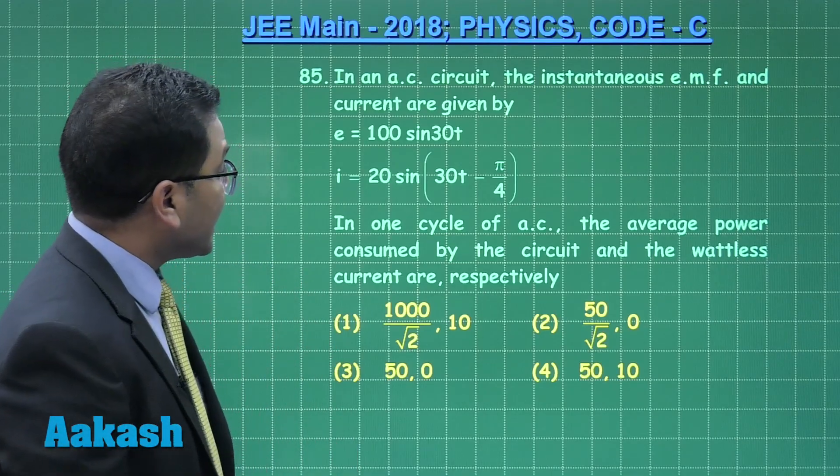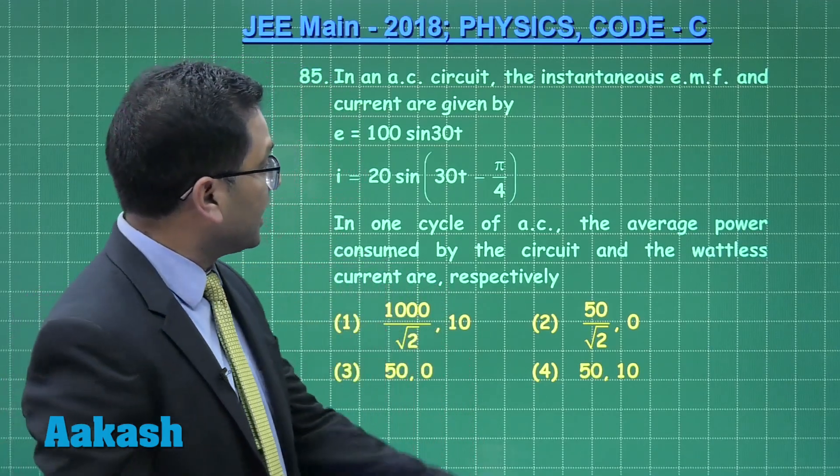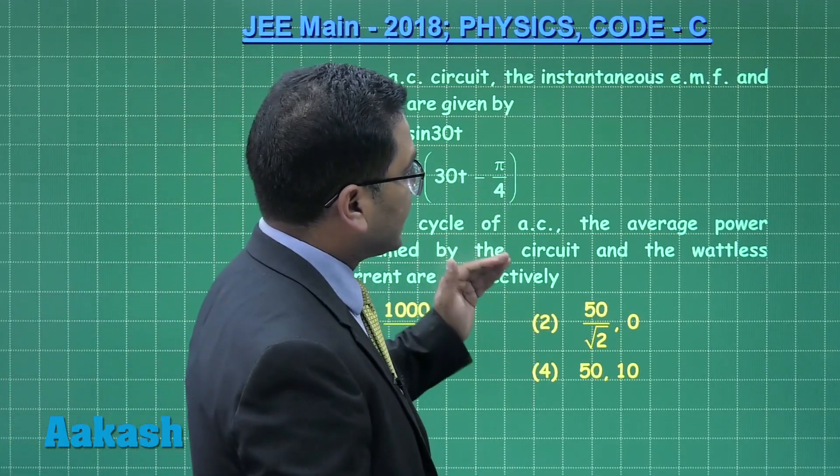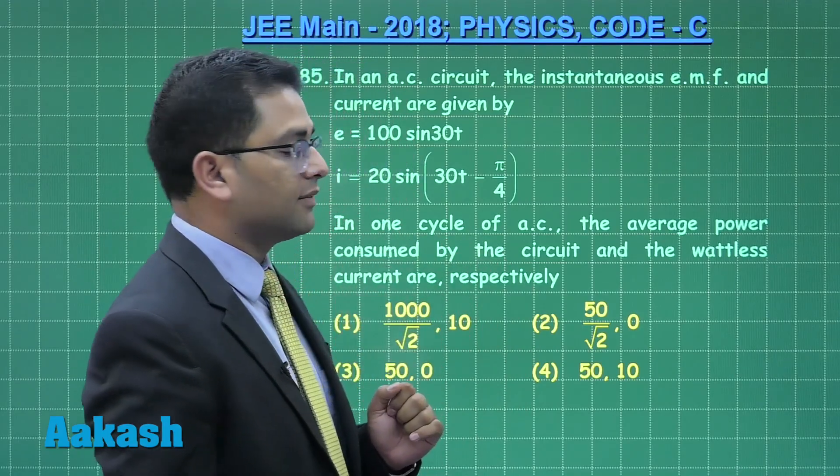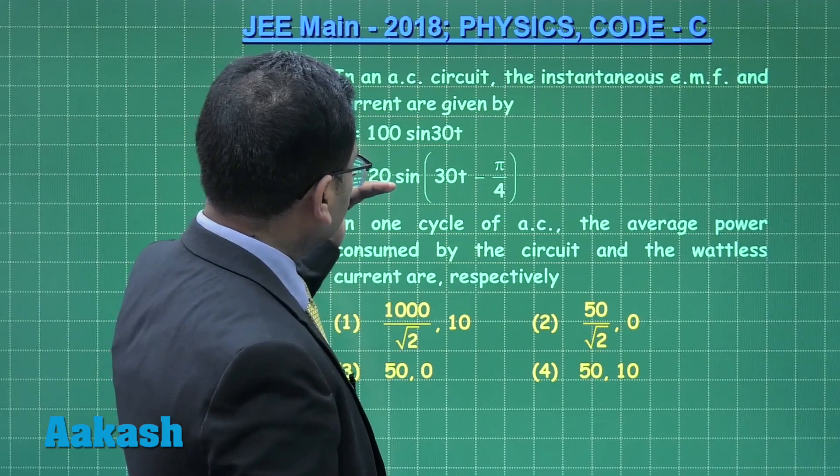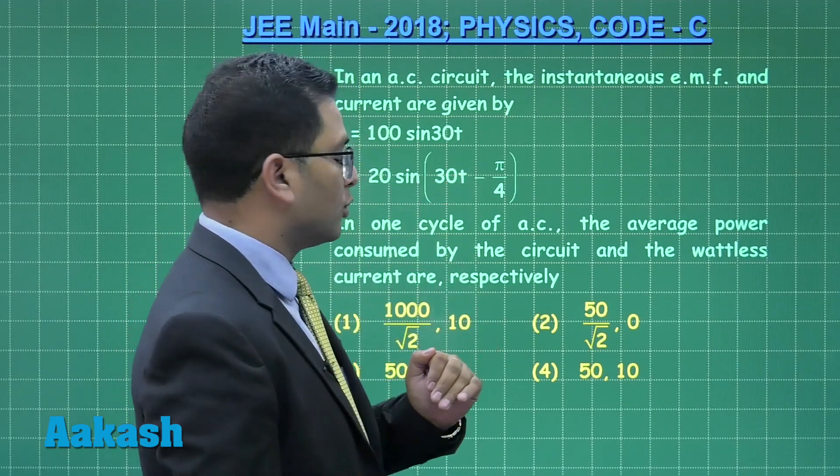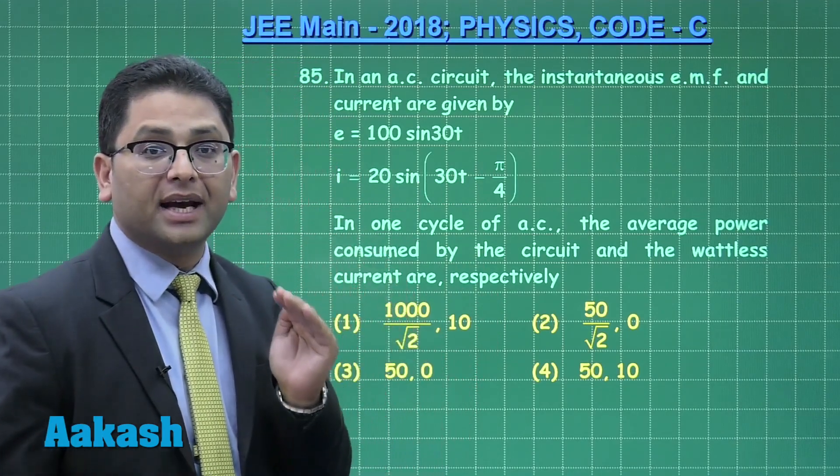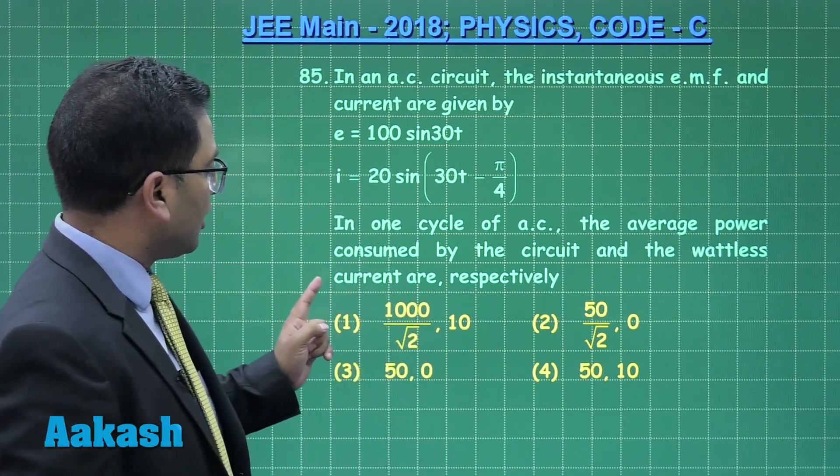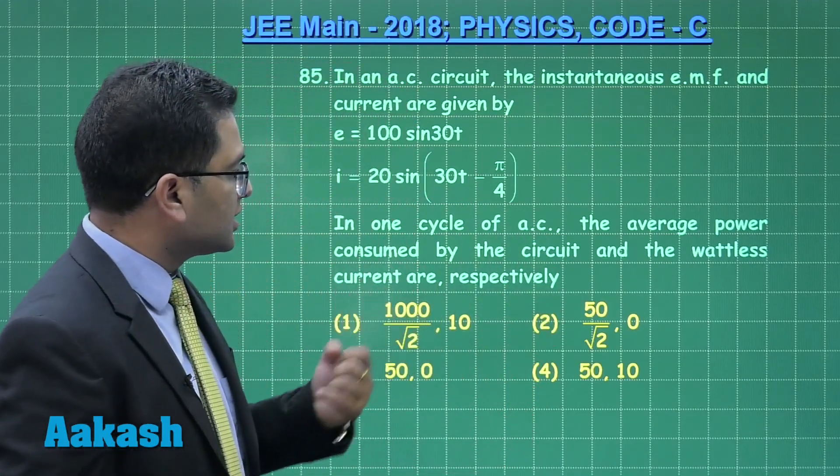Alright, the next question. A repetition from AC. Now here in an AC circuit, the instantaneous EMF and current are given by this particular expression, and you can see the phase difference between the EMF and the current is pi by 4, current is lagging behind. And here now, in one cycle of AC, the average power consumed by the circuit and the wattless current is to be calculated.